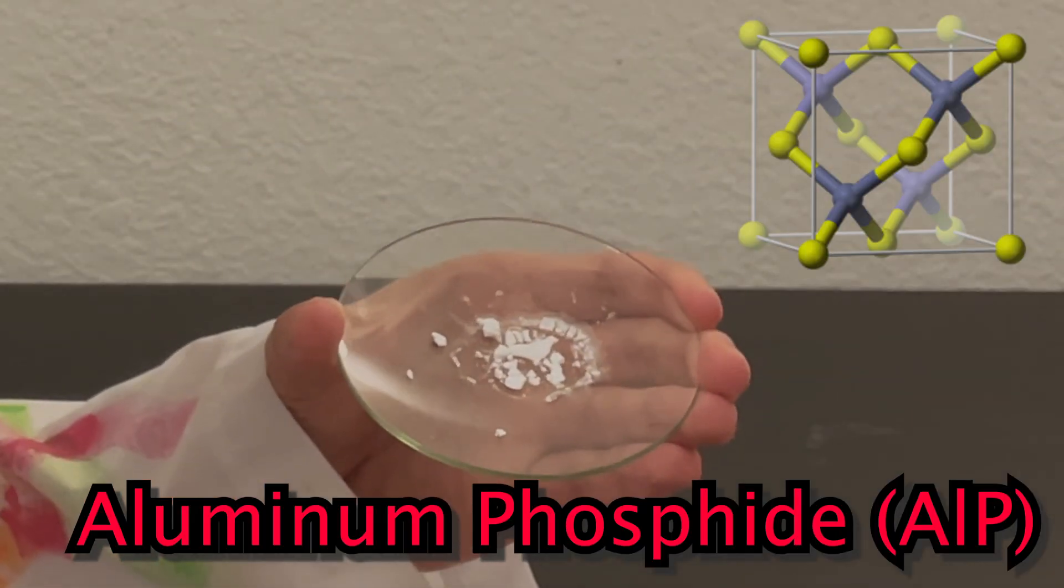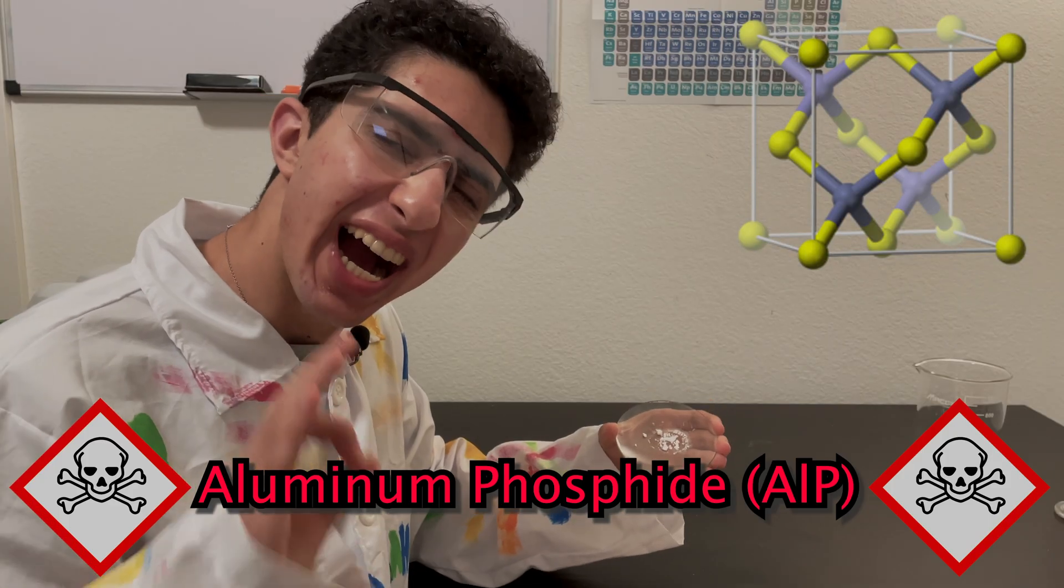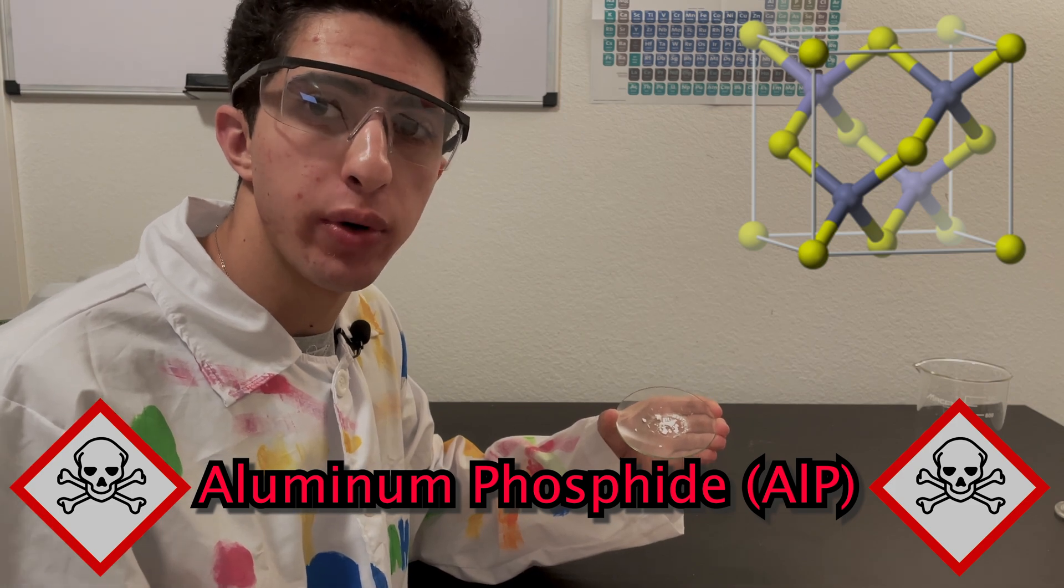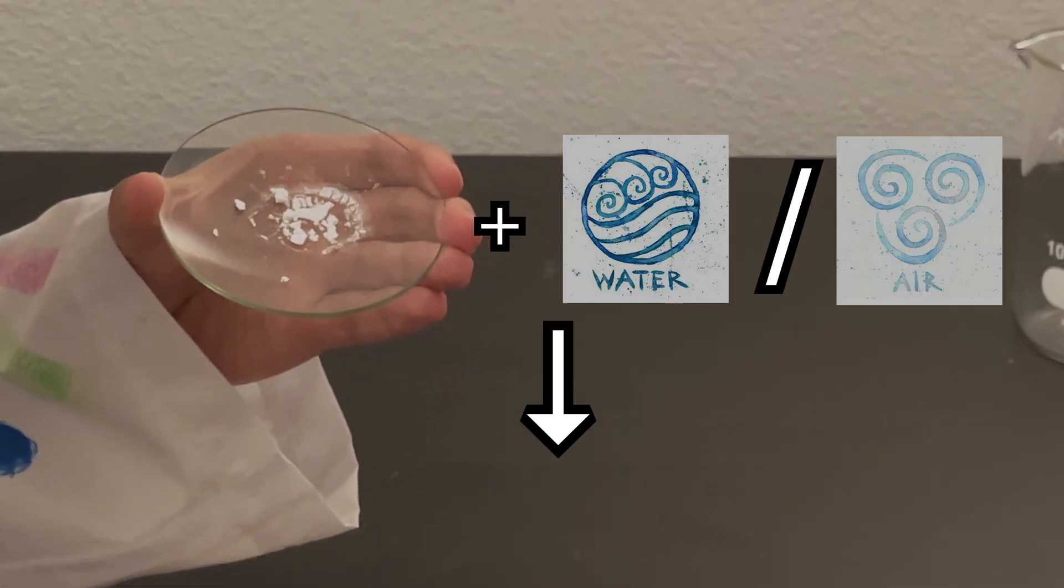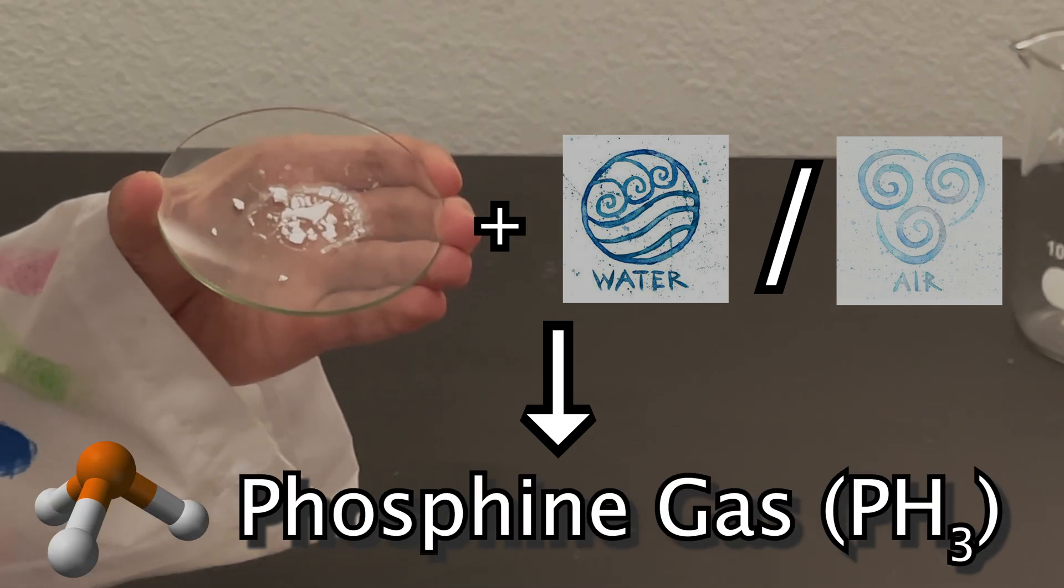This is aluminum phosphide. It's a highly, highly toxic chemical that reacts with water and air to form an even more toxic compound called phosphine gas.